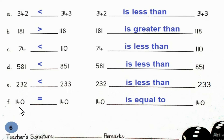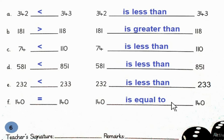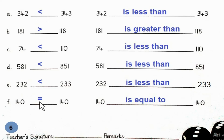F: 140 and 140. So, 140 is equal to 140. This is the less than sign, this is the greater than sign, and this is the equal to sign.